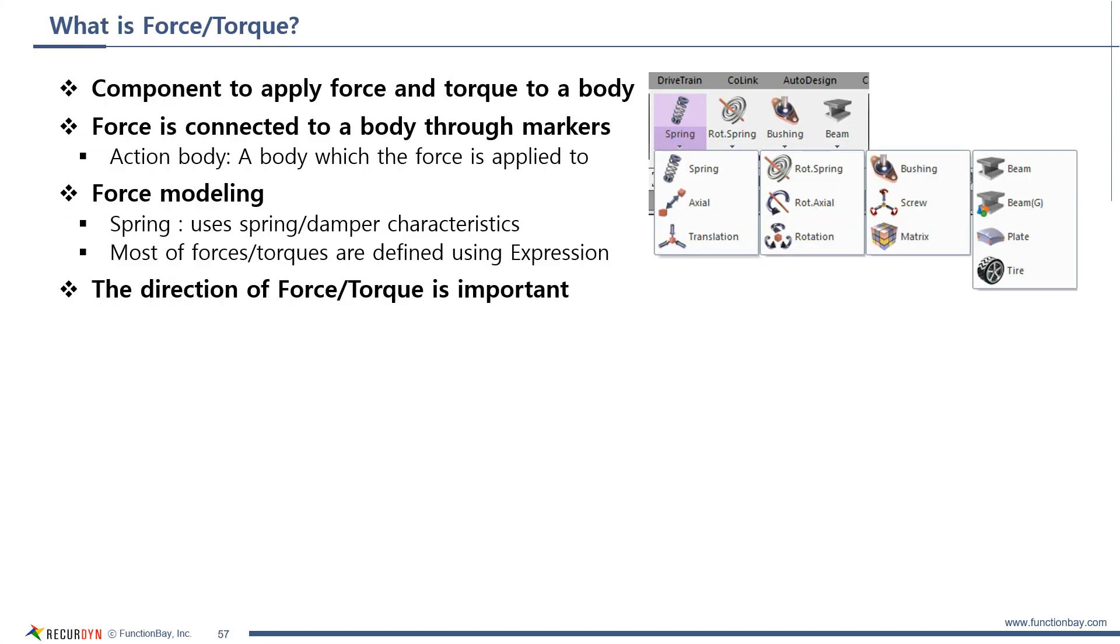To make a system move, force or torque needs to be applied. Force and torque are used to apply them to bodies. Like joint, force is connected to bodies through base and action marker. Usually, action body is a body where the force is applied.